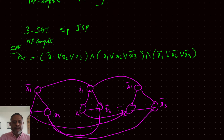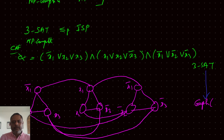This way, we convert our 3SAT problem into a graph useful for solving the independent set problem. We have 3 clauses, so we need to find 3 nodes in the graph that are independent of each other — one from each triangle.